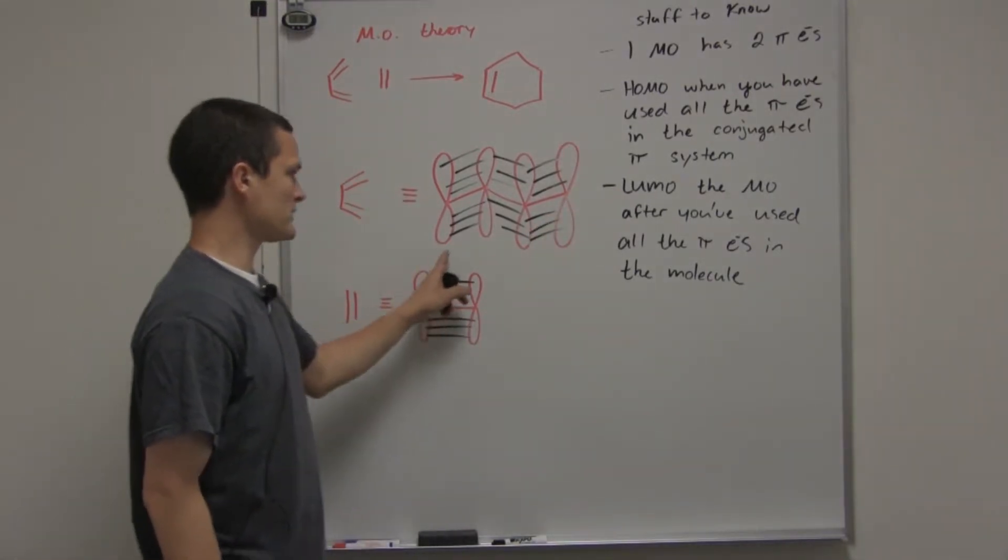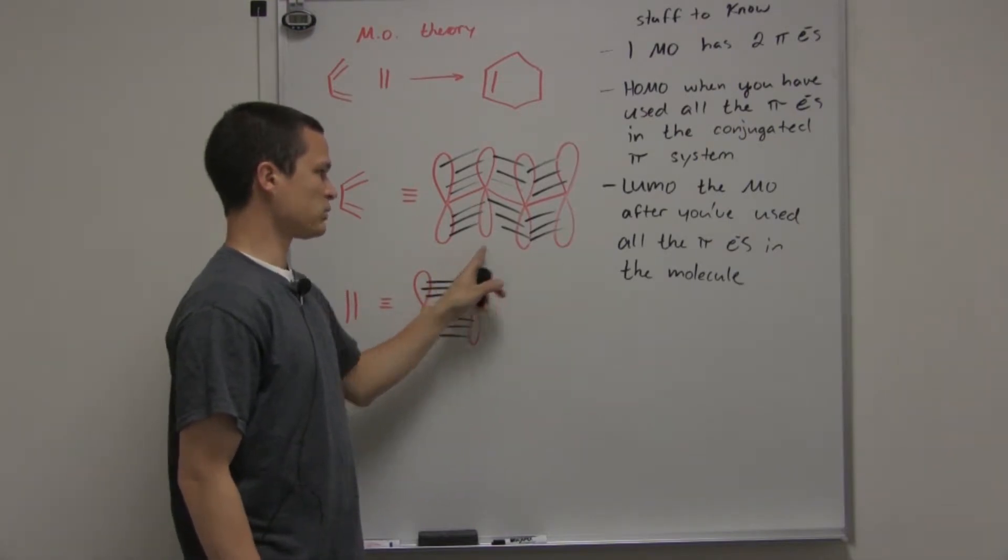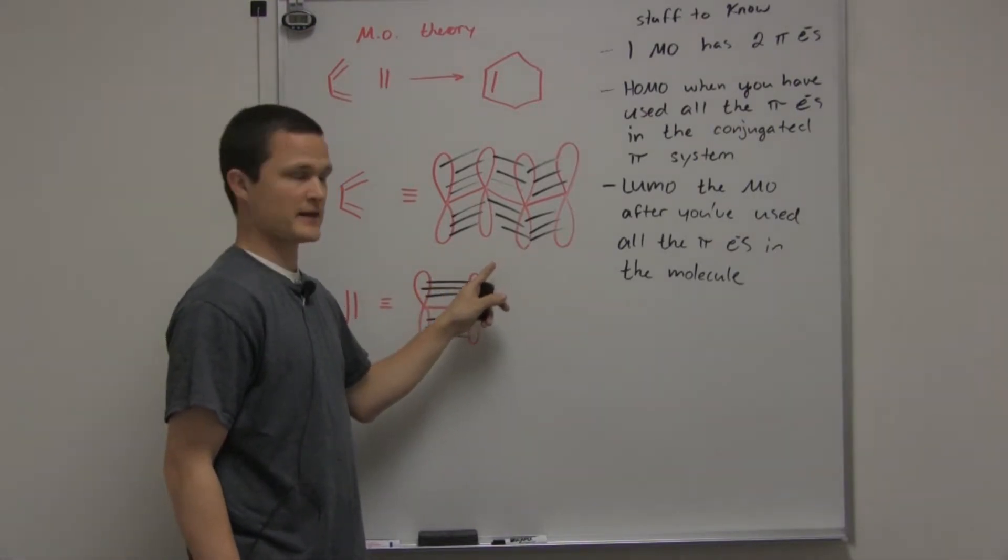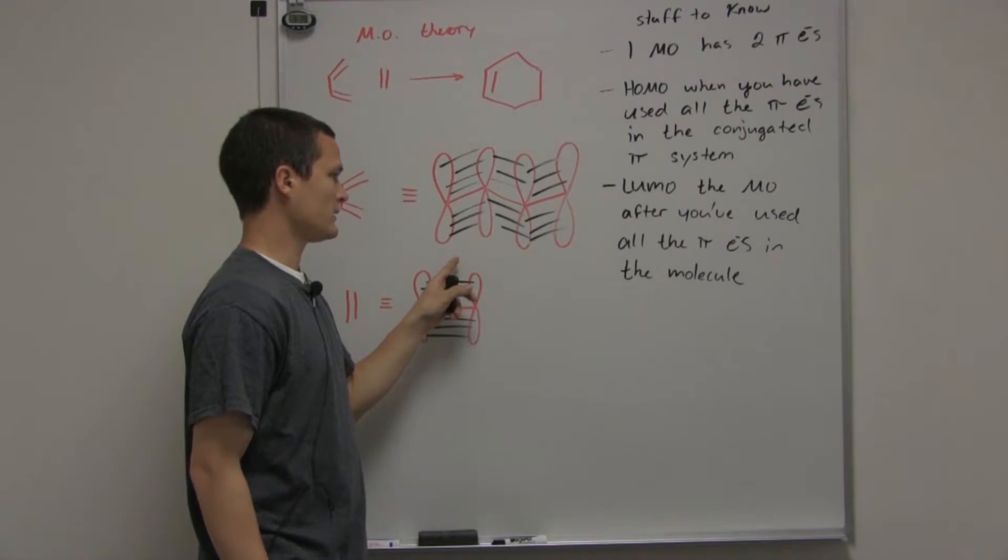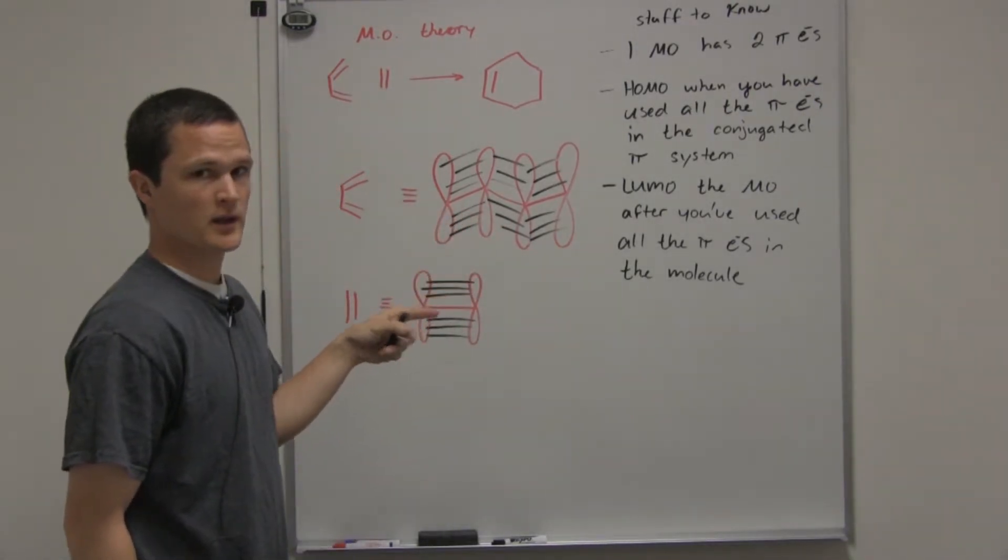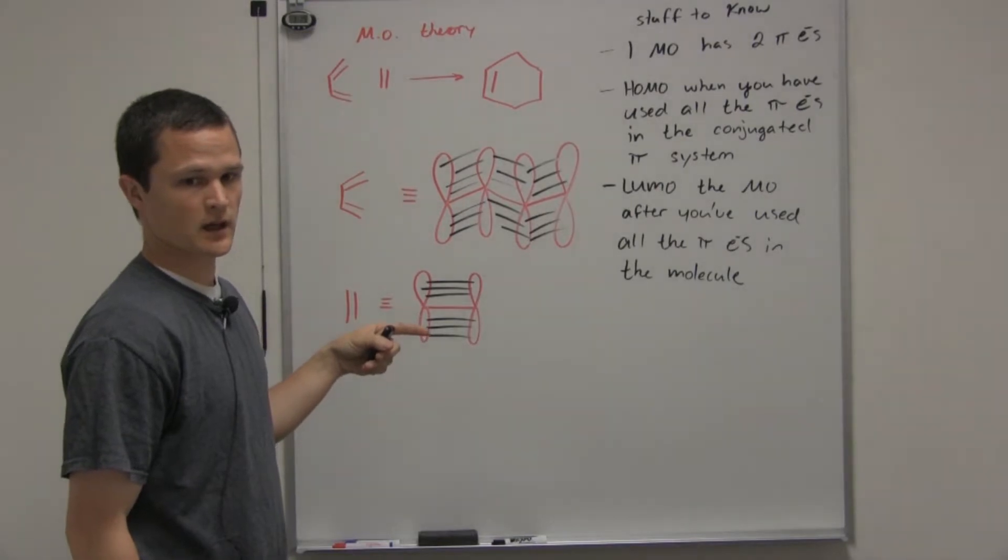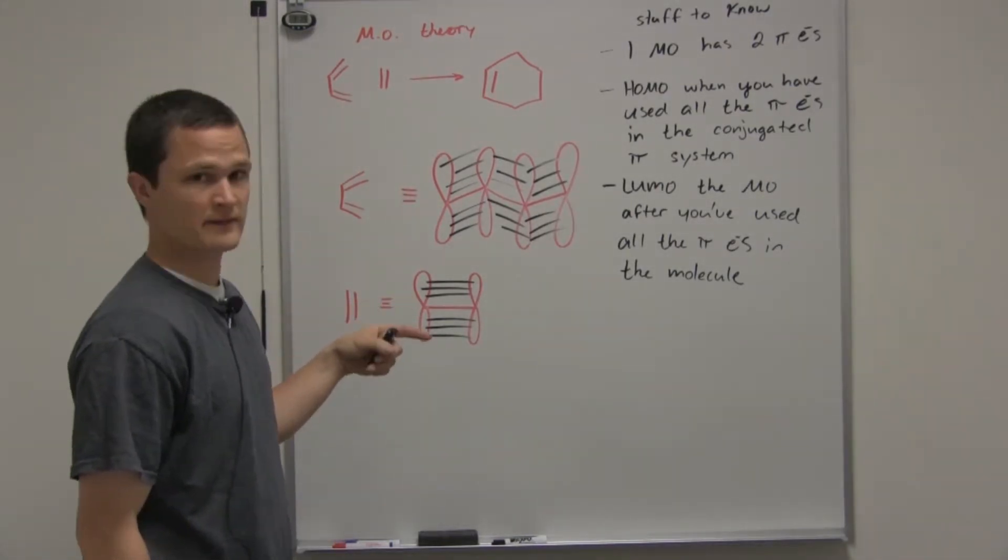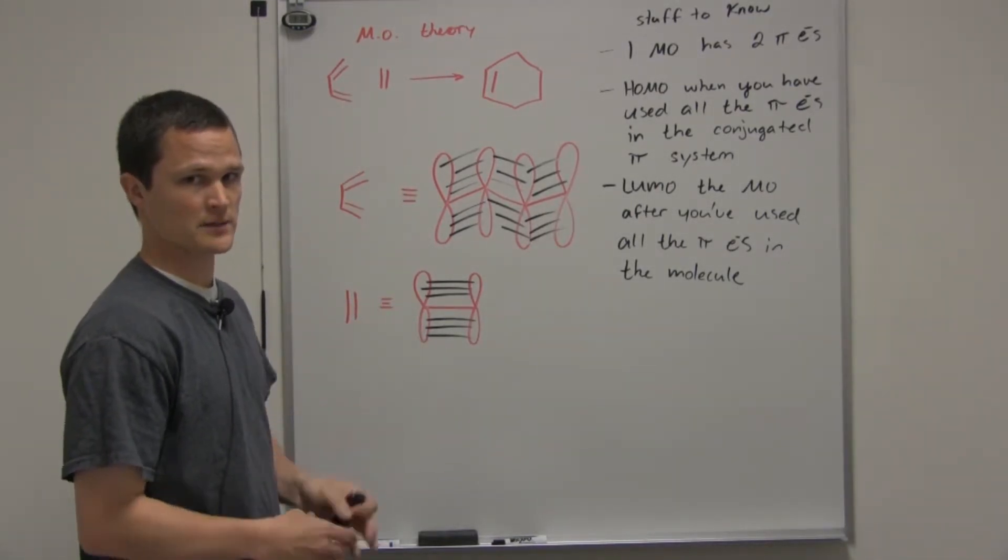In this next part, we're going to use this to explain what in phase and out of phase is, and come up with a pictorial representation of the HOMO and the LUMO, so that we can predict which ones are going to be in phase and out of phase, and if they're going to be symmetry allowed or symmetry forbidden.